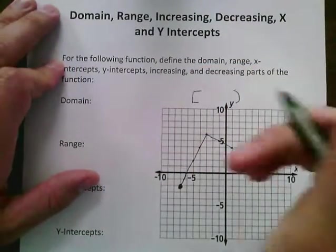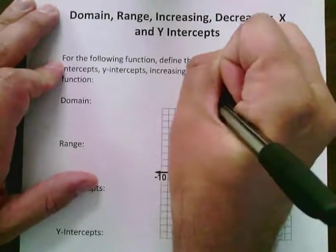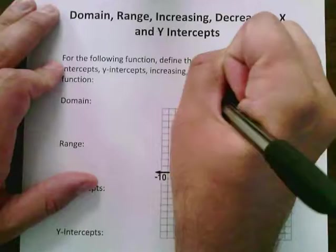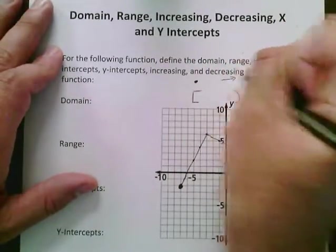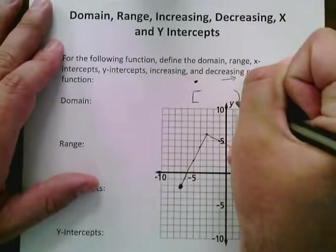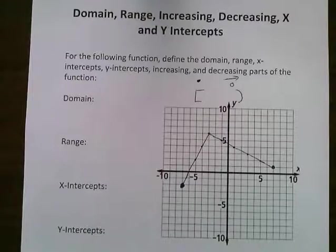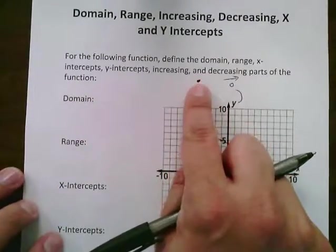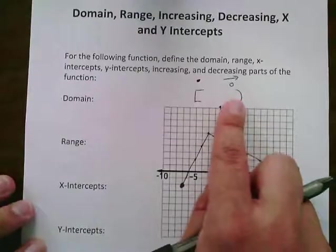So a quick review on when you use a bracket and when you use a parentheses. If the endpoint or the end is a point that is filled in, you're going to use a bracket. Anytime you have an arrow and it's continuing on forever, you're going to use a parentheses. Or if you have an open circle, you're going to use parentheses. So endpoints use brackets; open circles or arrows, you're going to use parentheses.